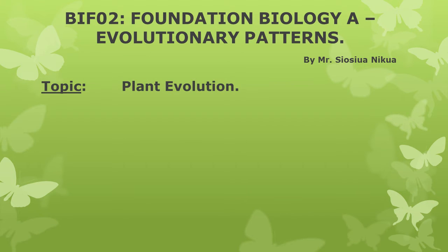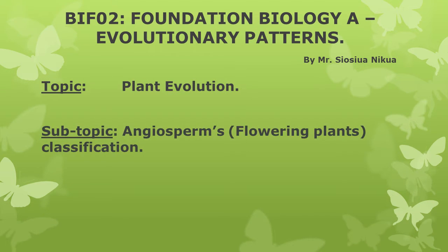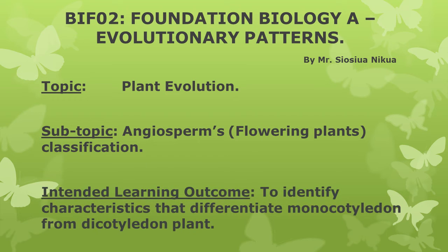Topic chosen: plant evolution. Subtopic: Angiosperms classification — the classification of flowering plants. The intended learning outcome is to identify characteristics that differentiate monocotyledon from dicotyledon plants.